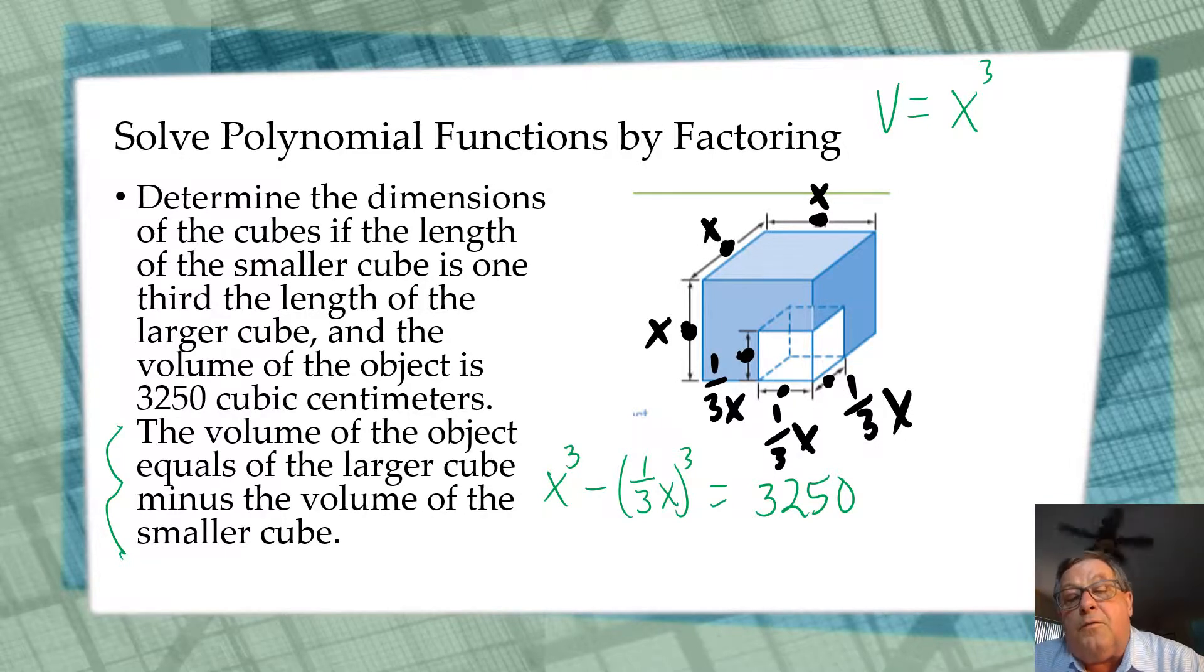Well, how about this? What's one-third x cubed? Well, one-third x cubed is—excuse me, I've got to put a negative in here, not an equal—is 1 over 27 x cubed equals 3,250.